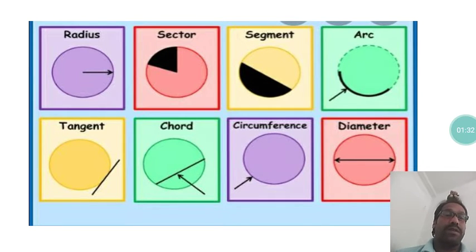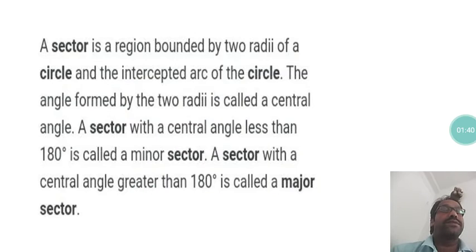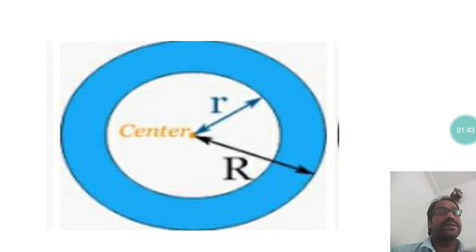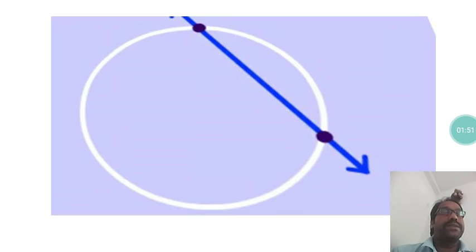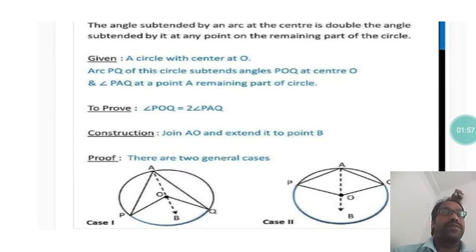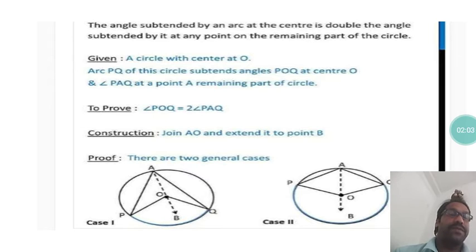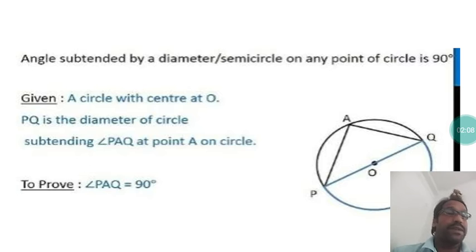In the first chapter we read theorems based on the chord, then theorems based on the arc. This week we are reading about the cyclic quadrilateral. We also learned concentric circles and the area of a ring. Then we learned the angle subtended by arc theorem and practiced many questions on it. We also used the concept that the angle in a semicircle is 90 degrees.